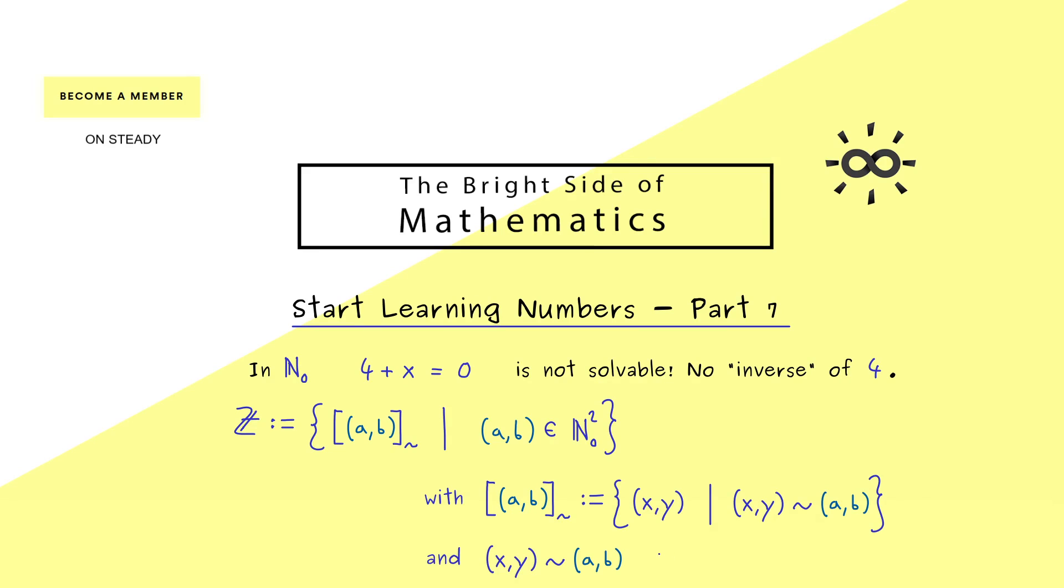Then of course what you also need is the definition of the equivalence relation here. So (x,y) and (a,b) are called equivalent if they fulfill that x + b = a + y. Now the visualization for this equivalence we gave in the last video was simply that the jump from y to x has the same value as the jump from b to a. And indeed this is the key idea to find the inverses.